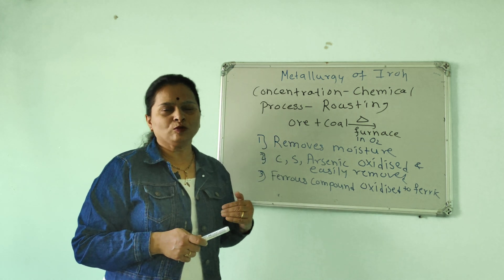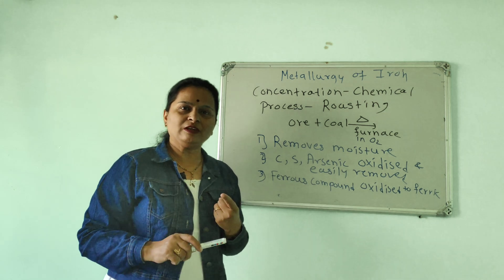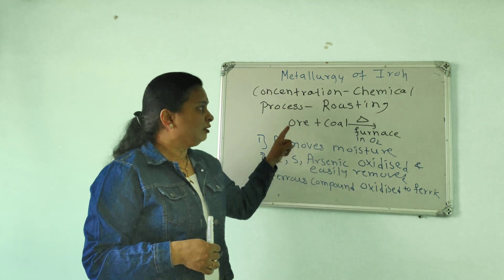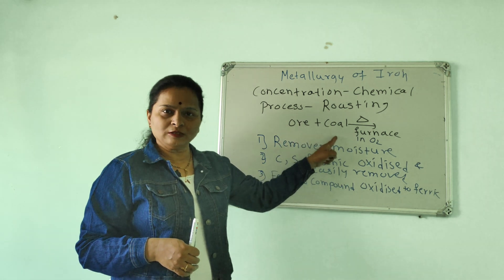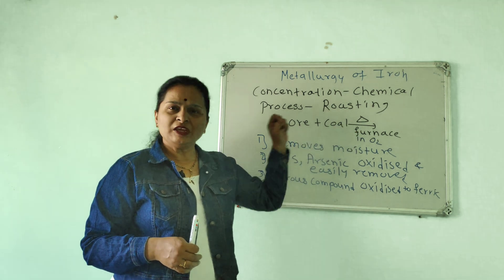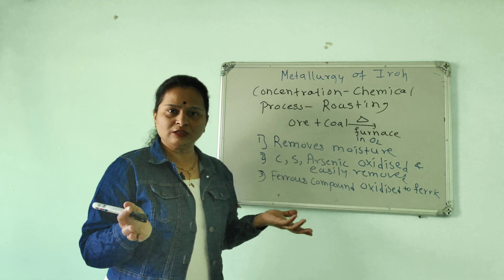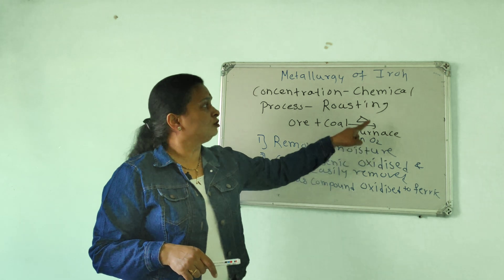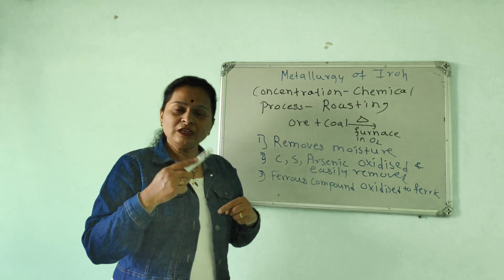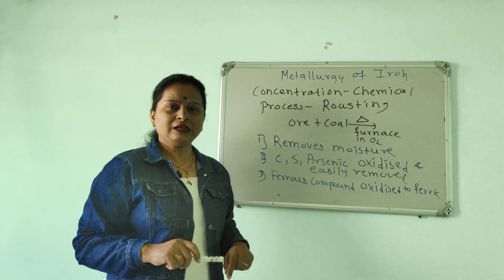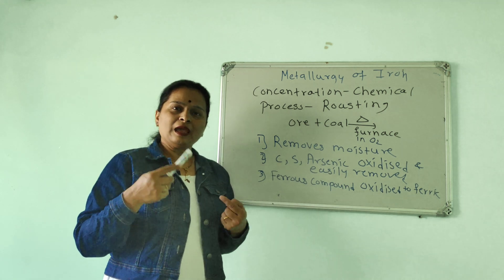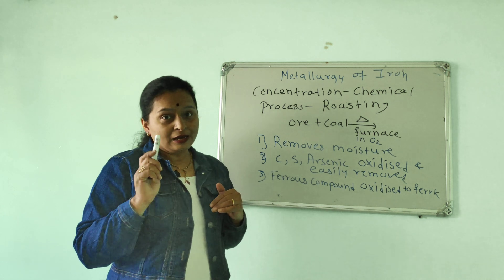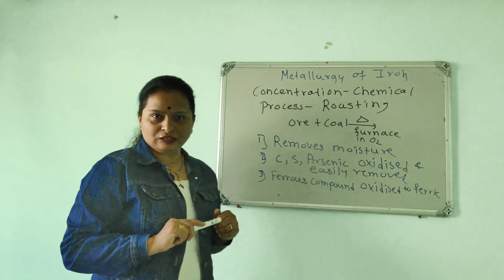In the physical process, gravity separation and magnetic separation are used. For the chemical process, the ore is heated in a furnace in the presence of oxygen — this is known as roasting. Heating in presence of oxygen is roasting, and heating in absence of oxygen is known as calcination.